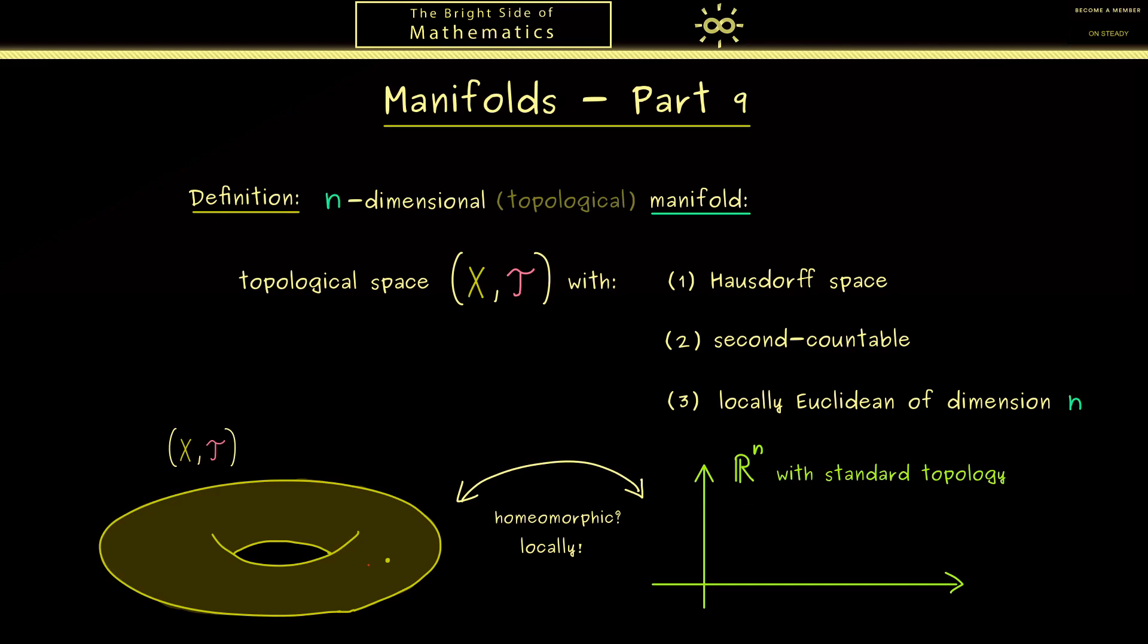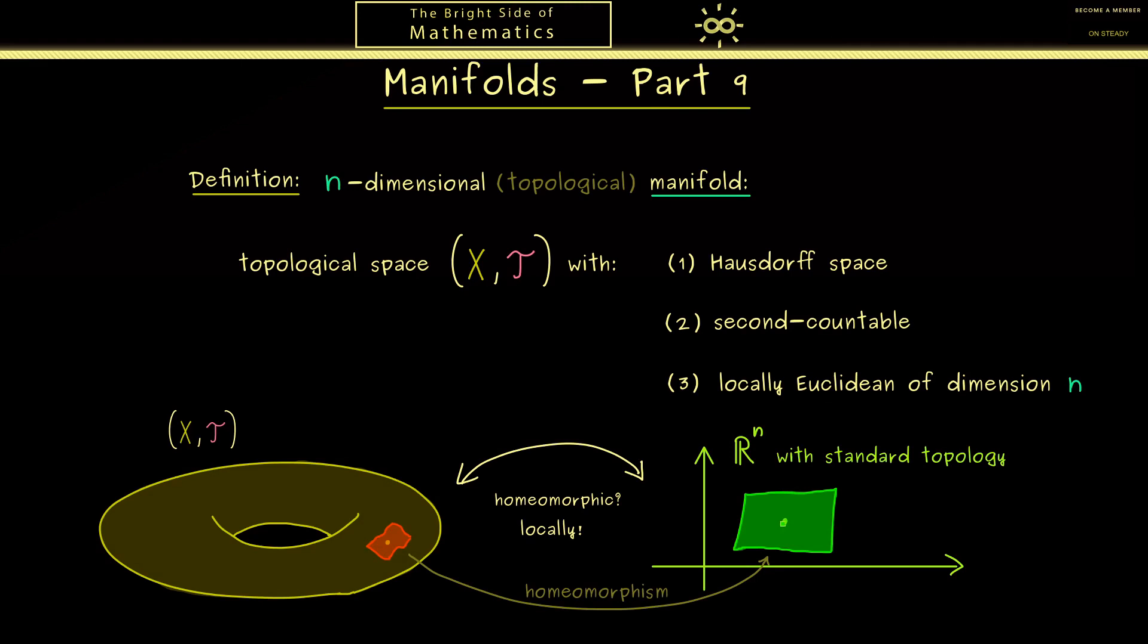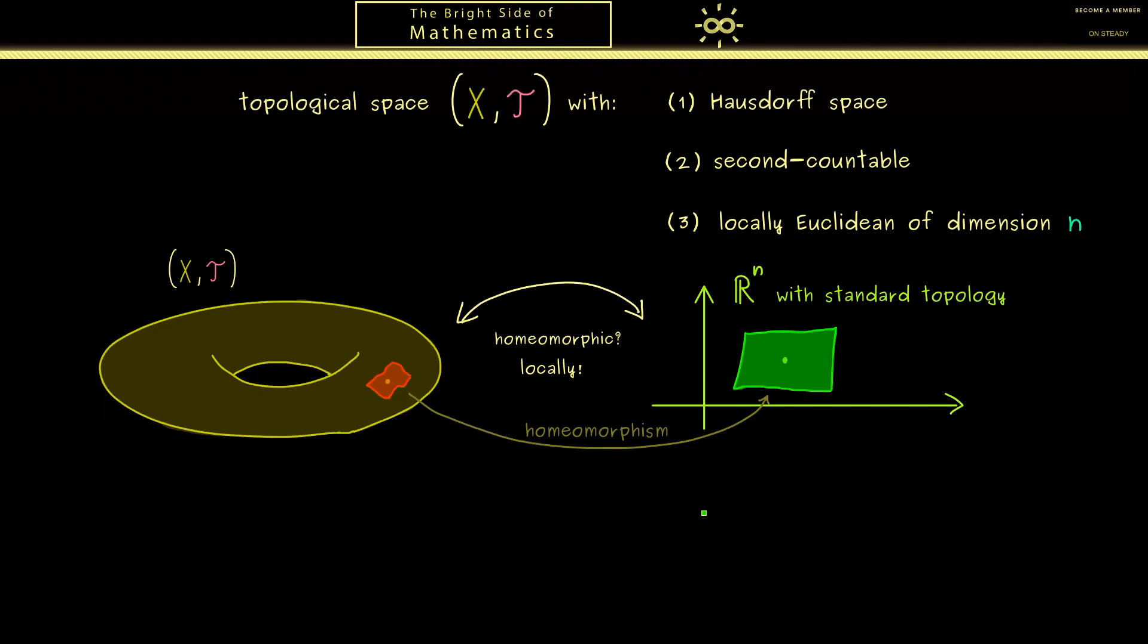Or in general, we would say we find an open neighborhood for this point here. And then we have a homeomorphism to an open set on the right-hand side. And indeed, this is the important property we call locally Euclidean. Therefore, I would say let's formulate this with a definition.